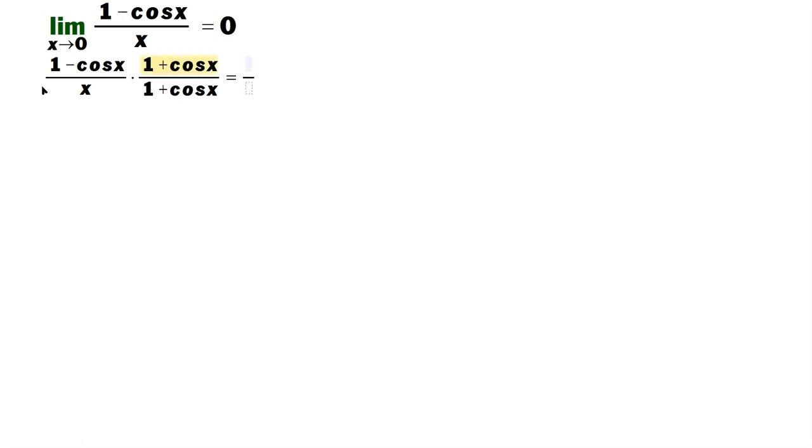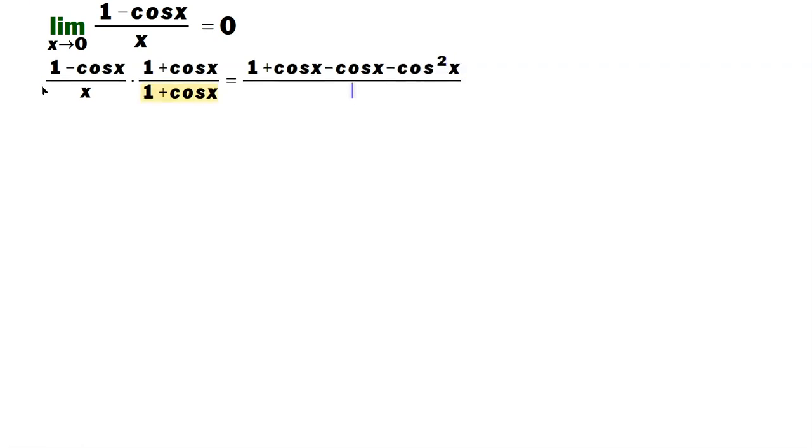Then you just FOIL out the numerator, so 1 times 1 is 1, 1 times cosine x is cosine x, negative cosine x times 1 is negative cosine x, and then negative cosine times positive cosine is going to give you a negative cosine squared x. And the bottom, you're going to have x times 1 plus cosine x.